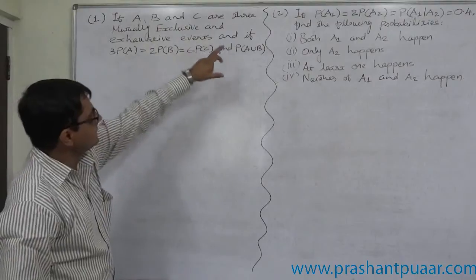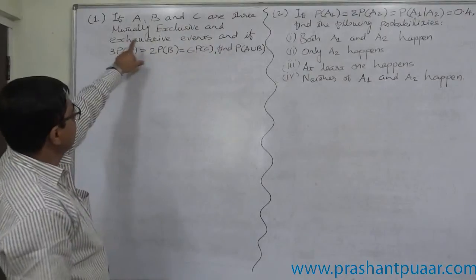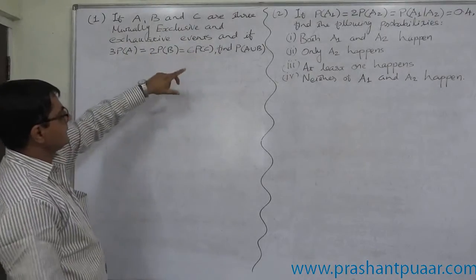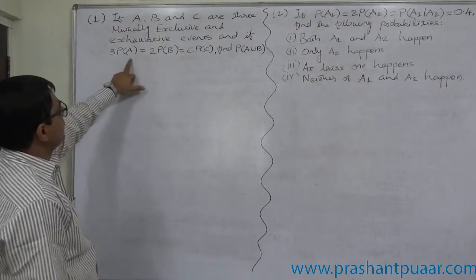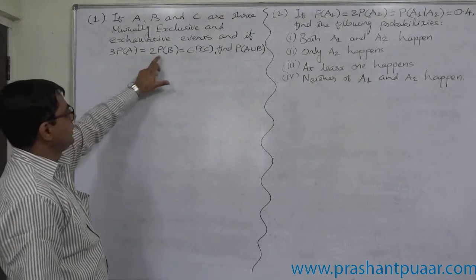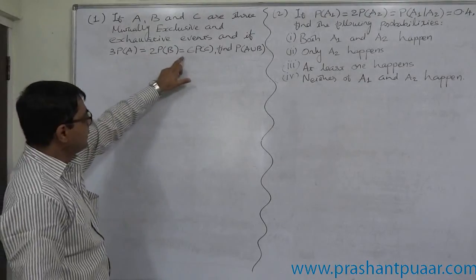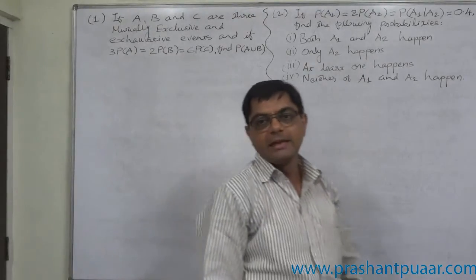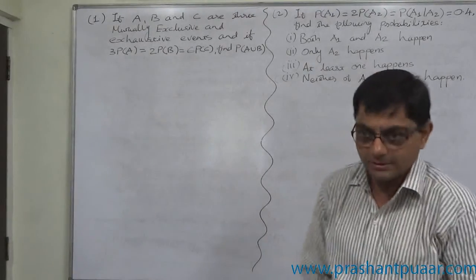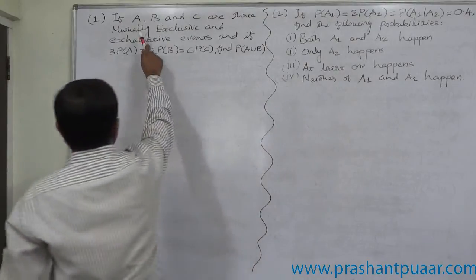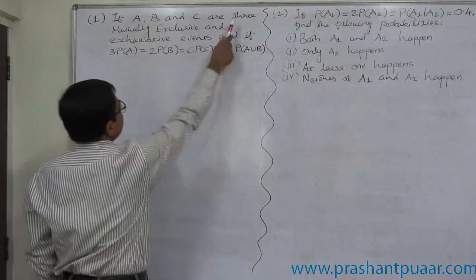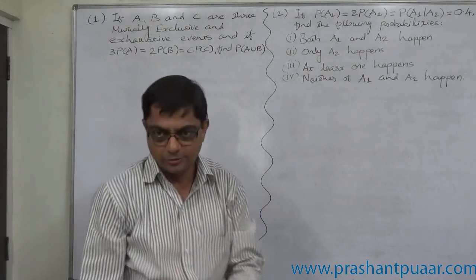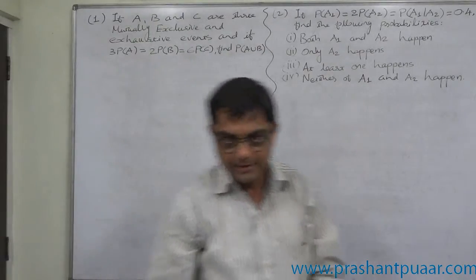If A, B and C are 3 mutually exclusive and exhaustive events, and if 3P of A equals 2P of B equals 6P of C, then find P of A union B. The important thing is A, B and C are mutually exclusive and exhaustive — what is the rule?